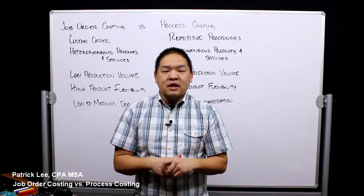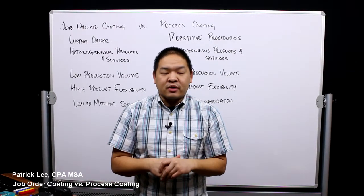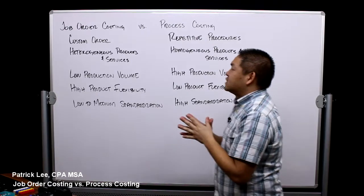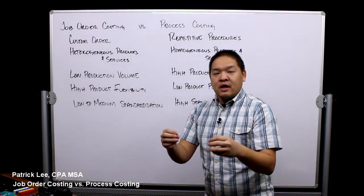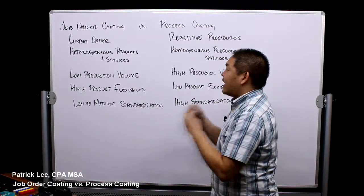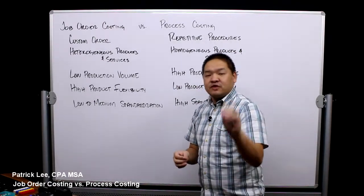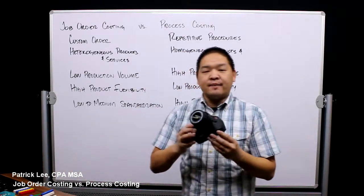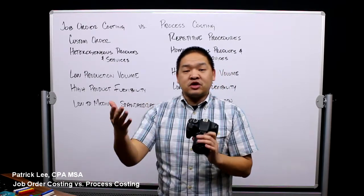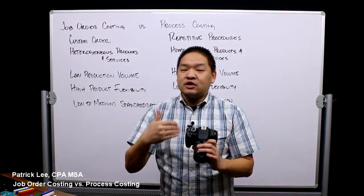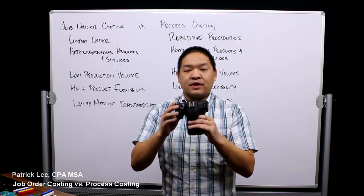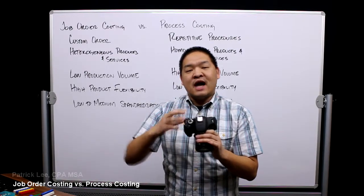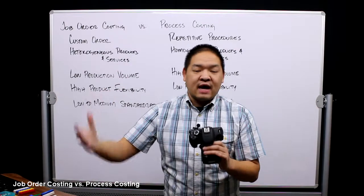So we have two ways of allocating our costs. The first one is job order costing. We use job order costing when we have custom orders. A great example would be a repair shop — like this camera right here. If I run a camera repair shop, when someone comes to me with a problem with their camera, I'm going to be doing different things to this camera than I would for another customer who comes in with a different camera problem.